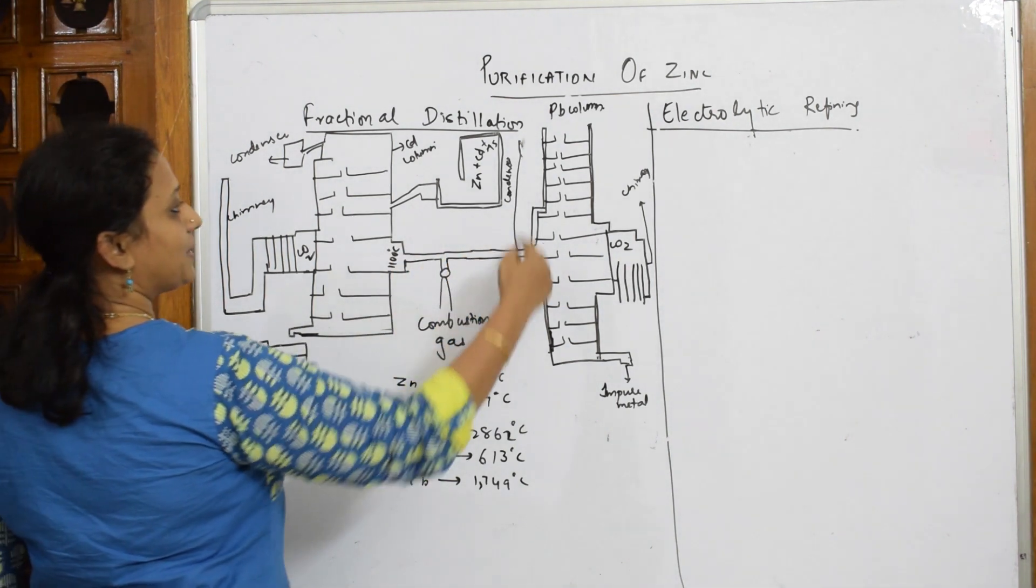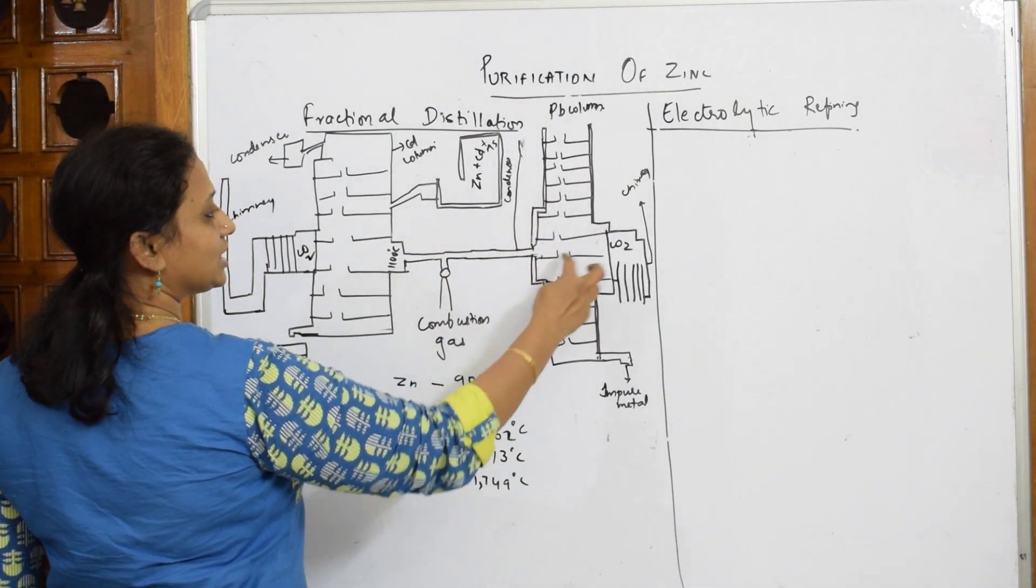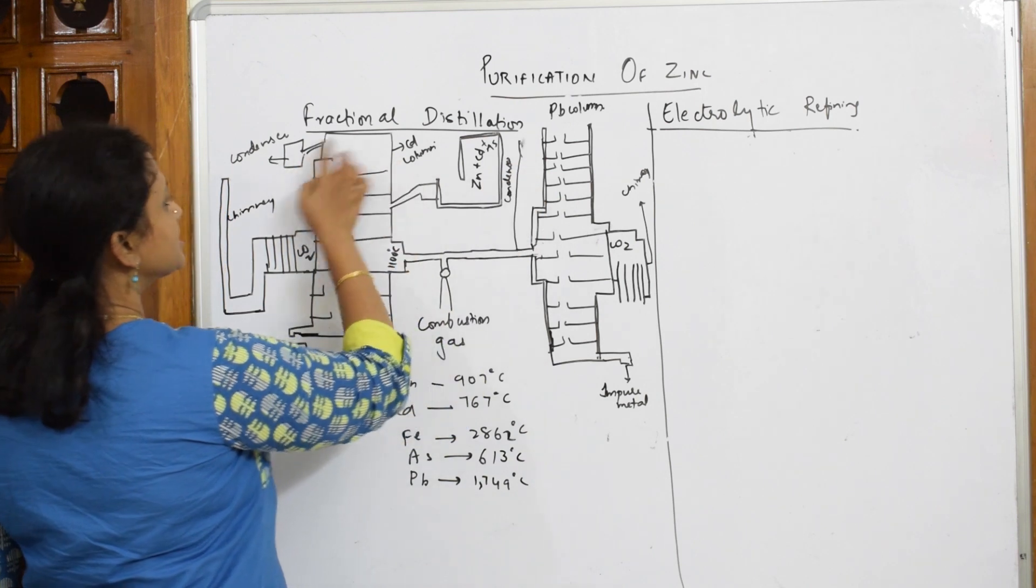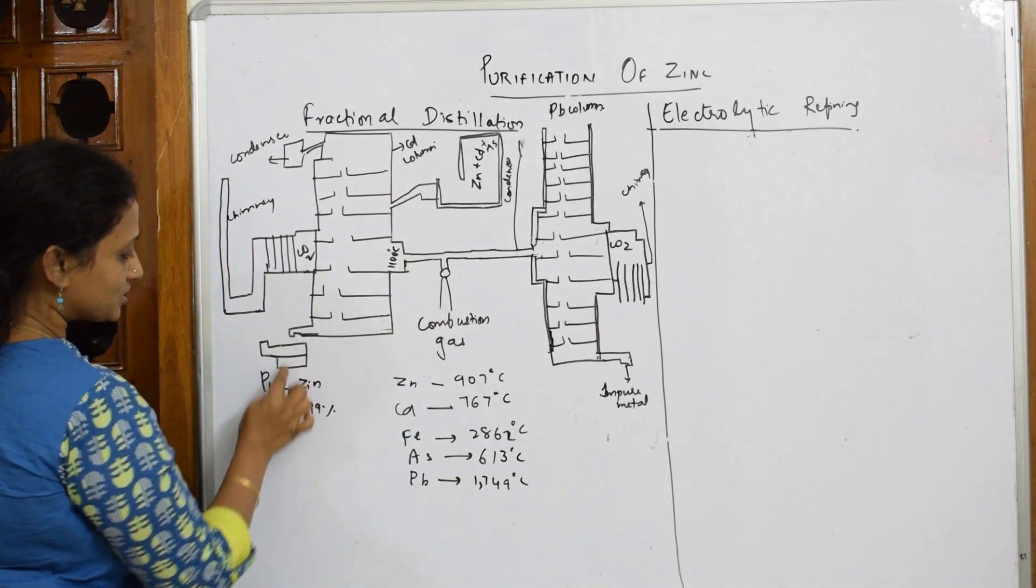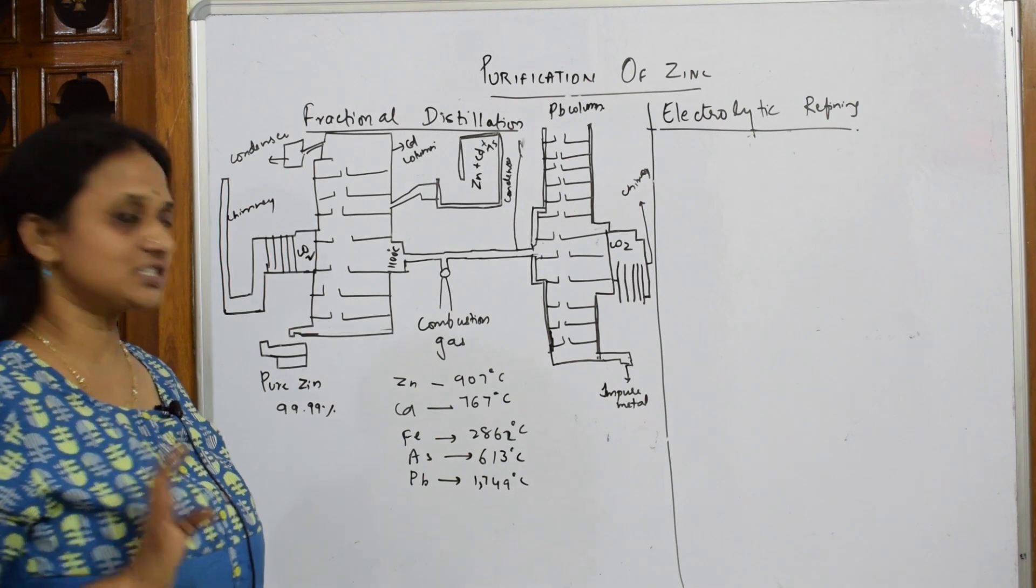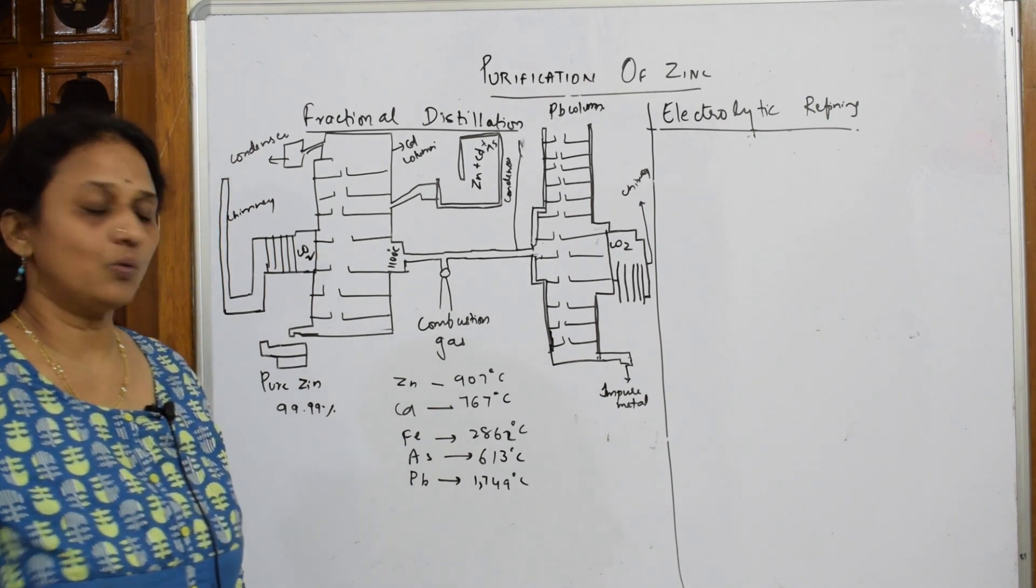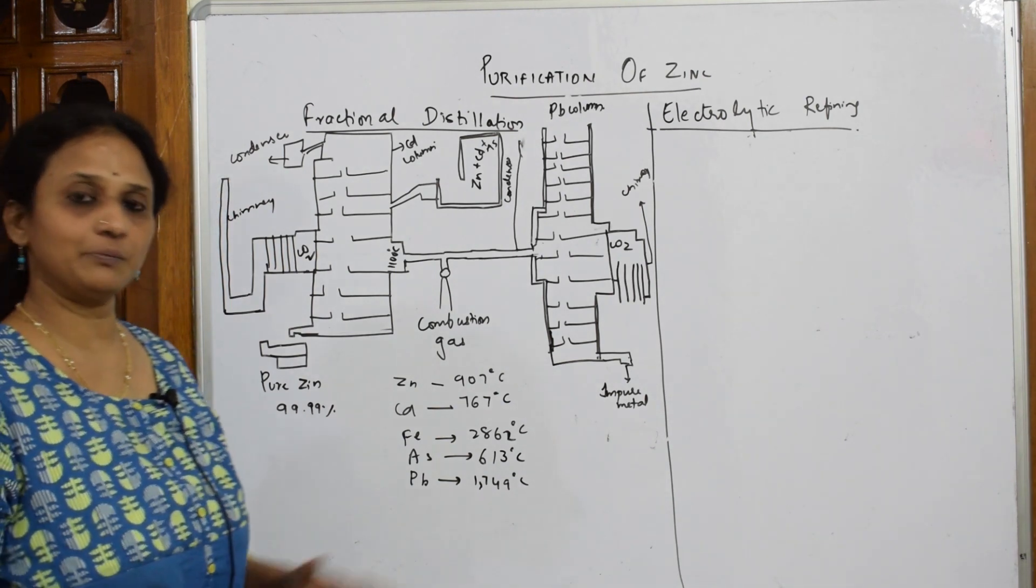These vapors pass through the fractionating column, and because of the condenser which is present, it condenses to form liquid, which is further solidified. Now we are going to take the boiling points into consideration.